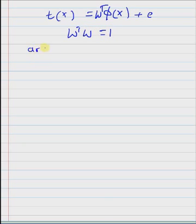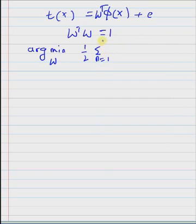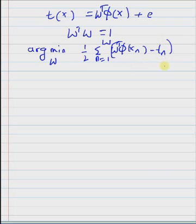The optimization function can be written as: determine the vector w that minimizes the sum of the square errors, that is the sum over n of (w transpose phi of xn minus tn) squared, where phi of xn and tn are the samples and labels respectively.